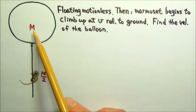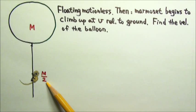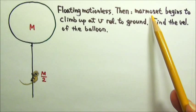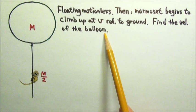A large helium balloon with a rope has mass m. When a pygmy marmoset of mass half m is holding onto the rope, this whole system — balloon, rope, and pygmy marmoset — is floating motionless in the air. The marmoset then begins to climb up the rope at a steady speed of v relative to the ground. Find the velocity of the balloon while the marmoset climbs.